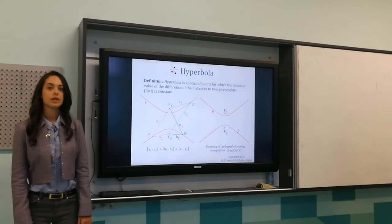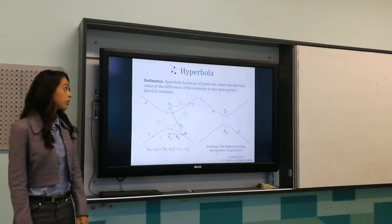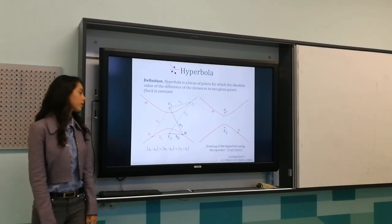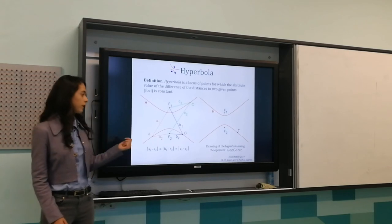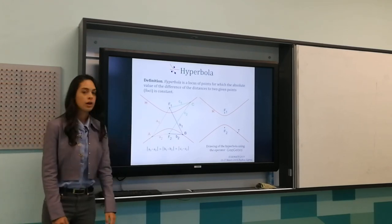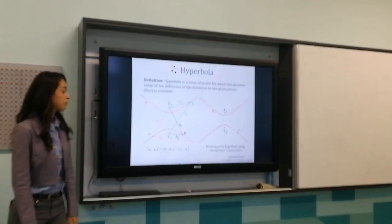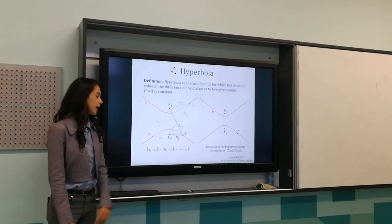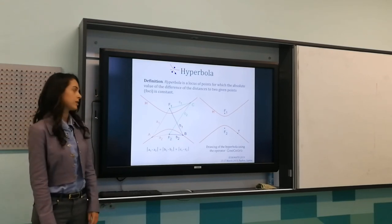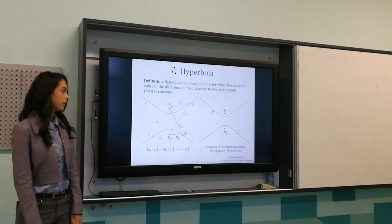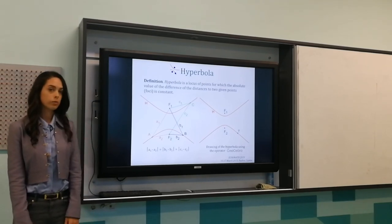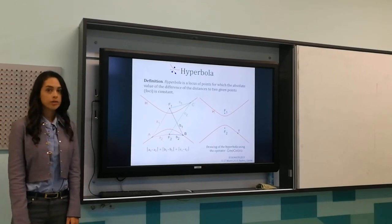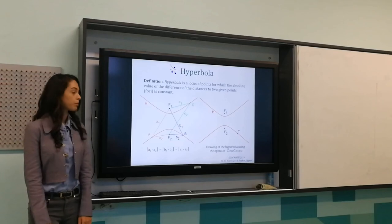The last conic we are going to consider is the hyperbola. The hyperbola is defined as the locus of points for which the absolute value of the difference of the distances to two given points — called foci — is constant. Here on the left side, you can see the hyperbola H defined by its two foci F1 and F2. Points A, B and C are on the hyperbola, and for them it's true that |A1 − A2| equals |B1 − B2| equals |C1 − C2|. We chose this definition because in GeoGebra, in order to draw a hyperbola, we need to choose three points — the two foci F1 and F2 and another point D which belongs to the hyperbola — and the software draws a unique hyperbola.